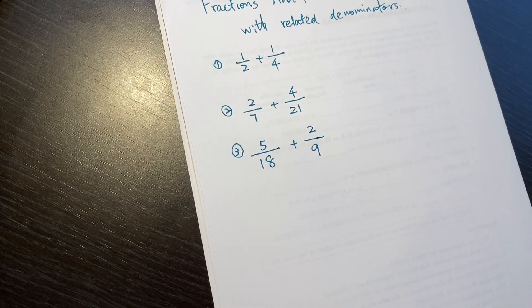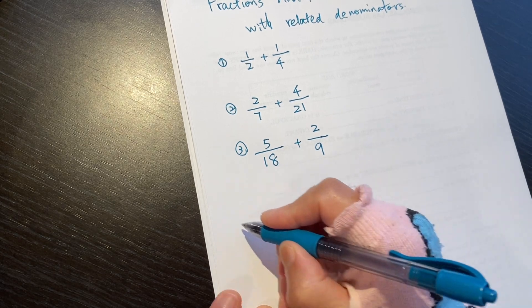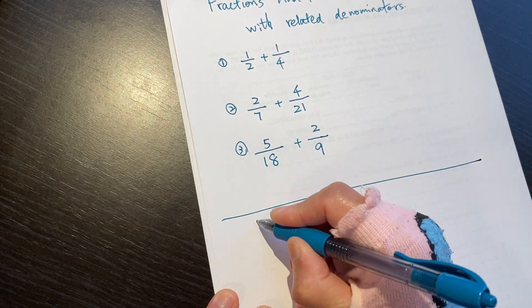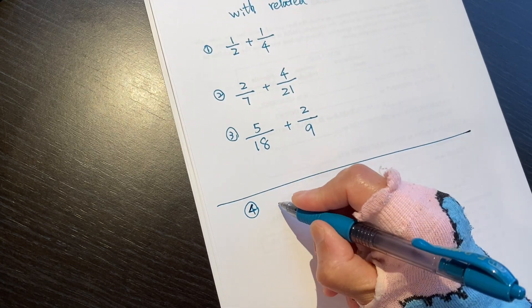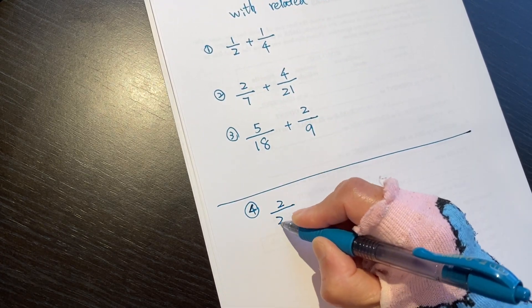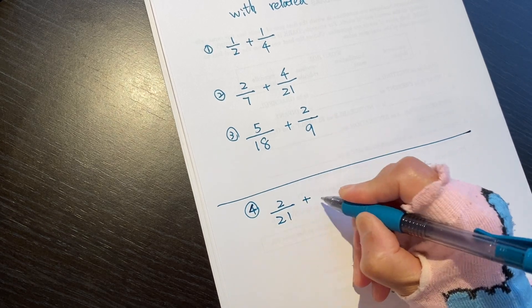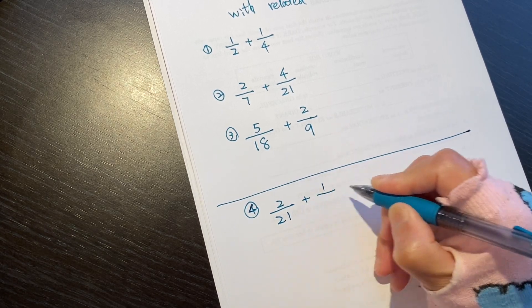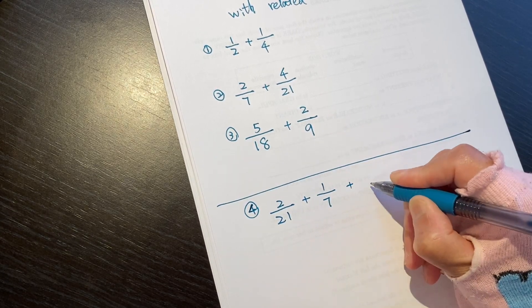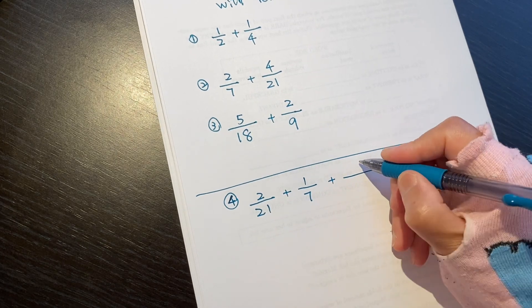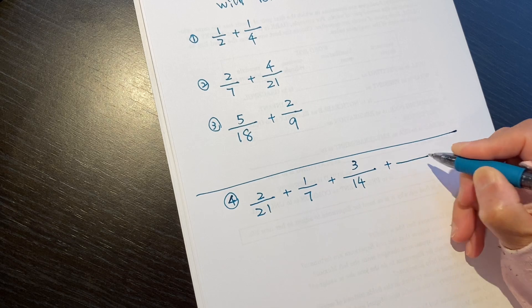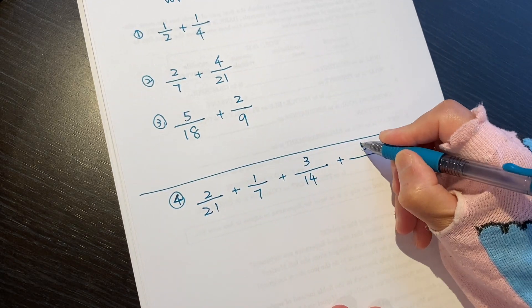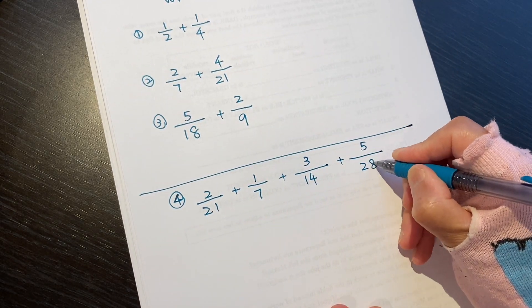I will bring another challenge question. Question number 4 is a challenge: it's 2 over 21 plus 1 over 7 plus 3 over 14 plus 5 over 28.